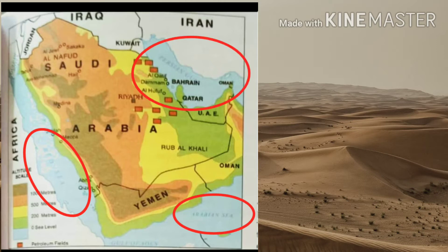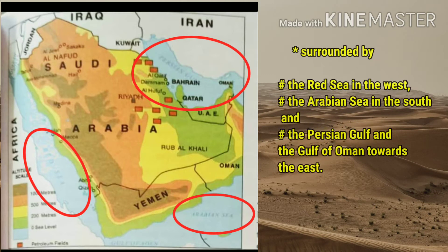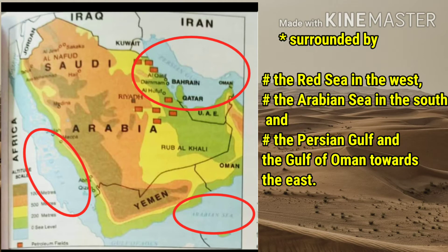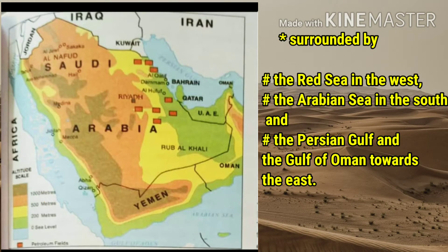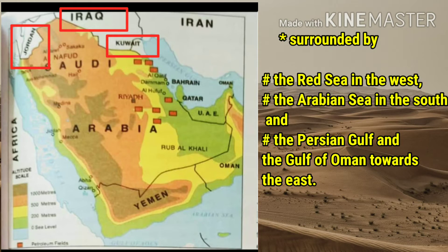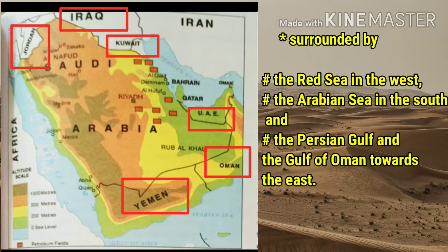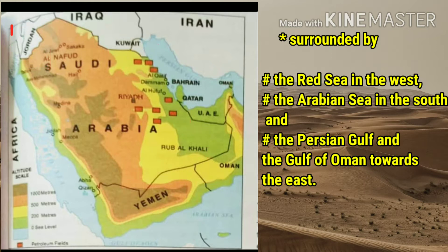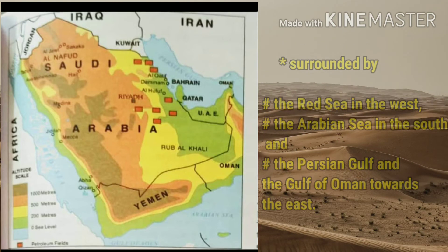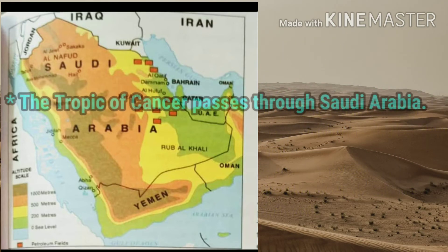Saudi Arabia is surrounded by the Red Sea in the west, Arabian Sea in the south, and the Persian Gulf and the Gulf of Oman towards the east. The word gulf means a large area of sea that is surrounded by land. In the north side of Saudi Arabia, Jordan, Iraq and Kuwait are situated, whereas Yemen, Oman and UAE — United Arab Emirates — are located in the southern part.